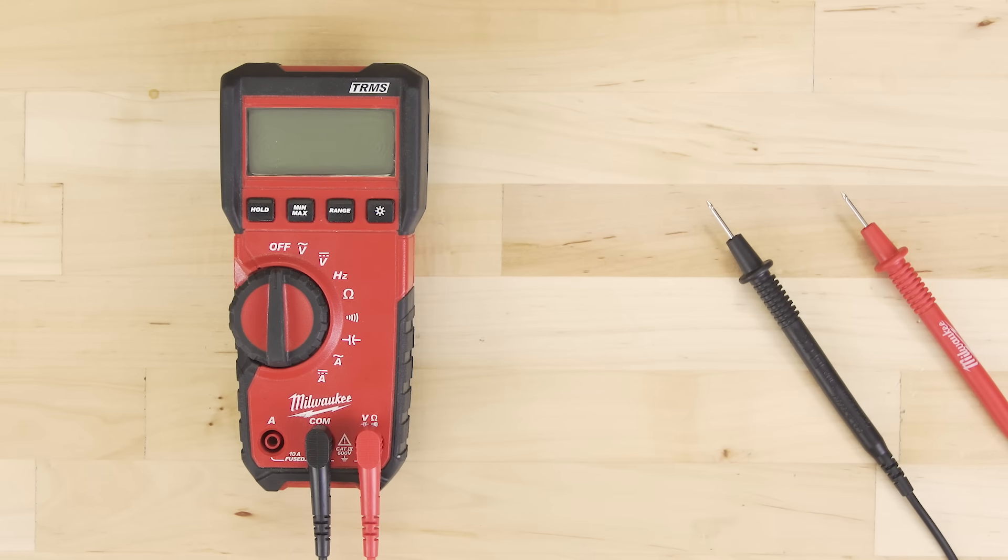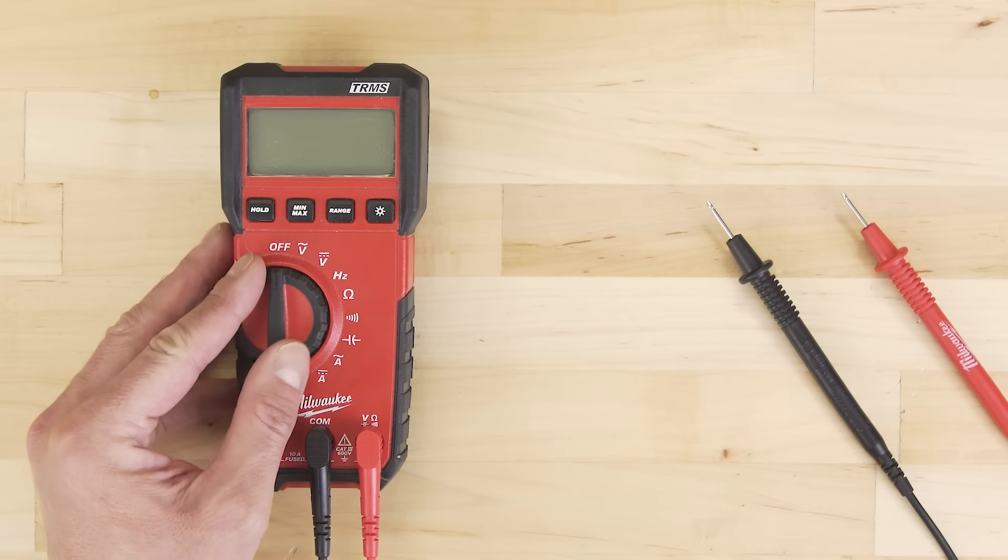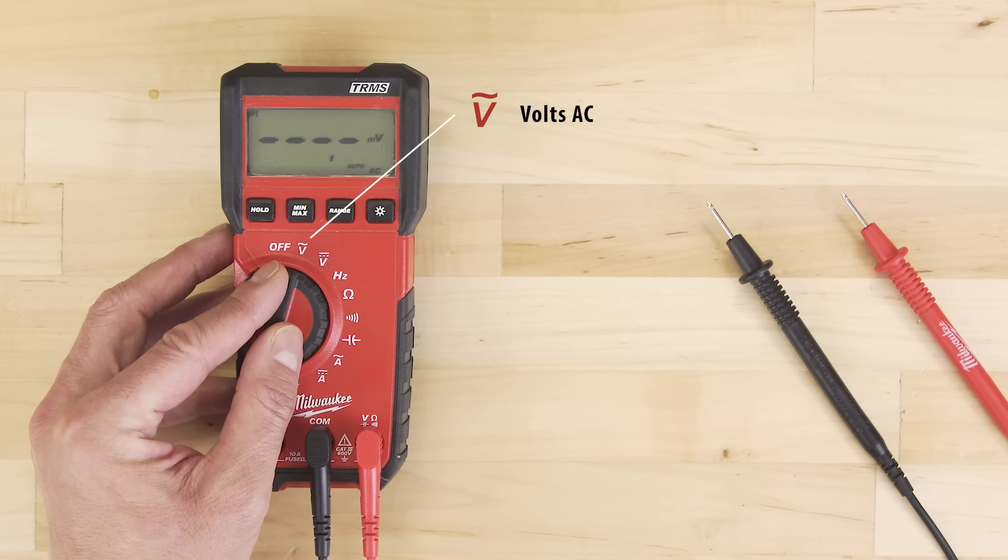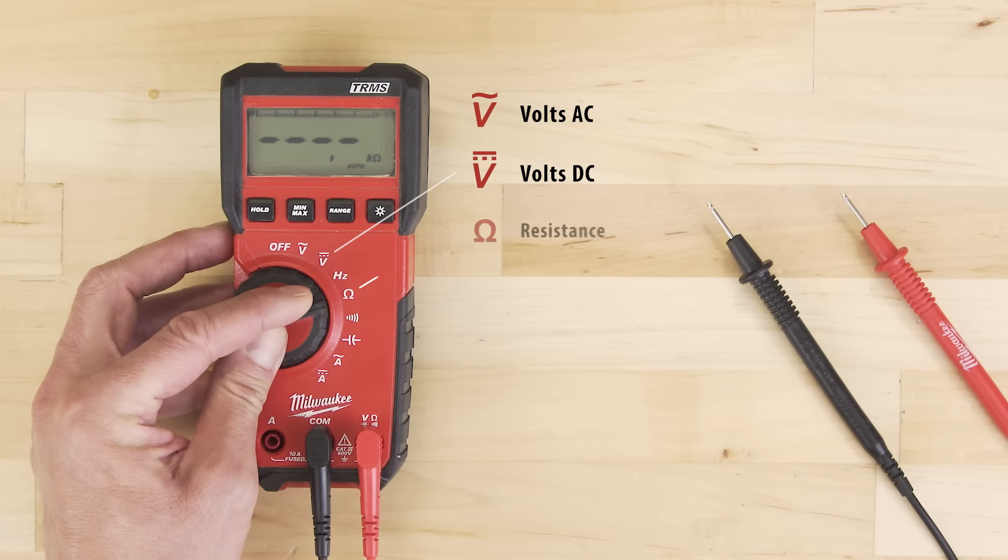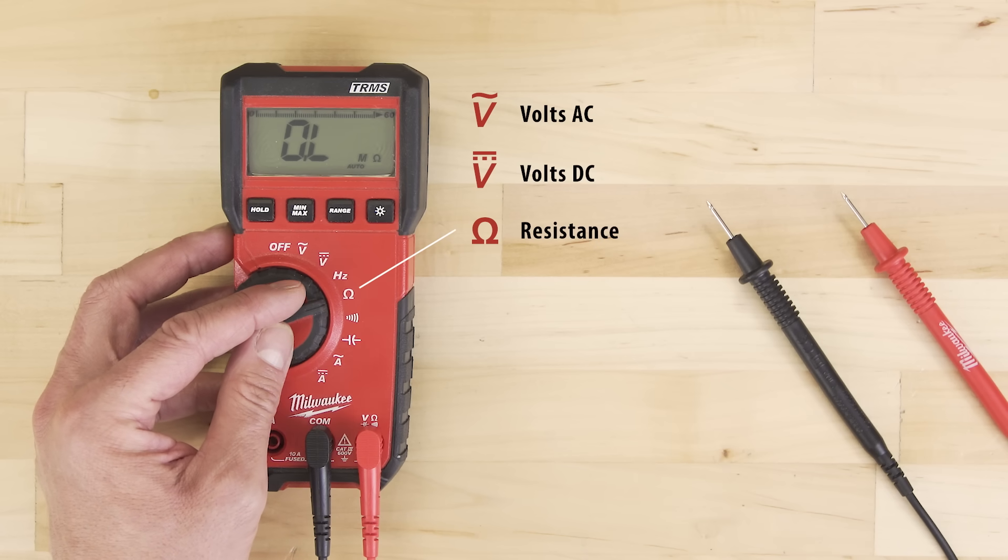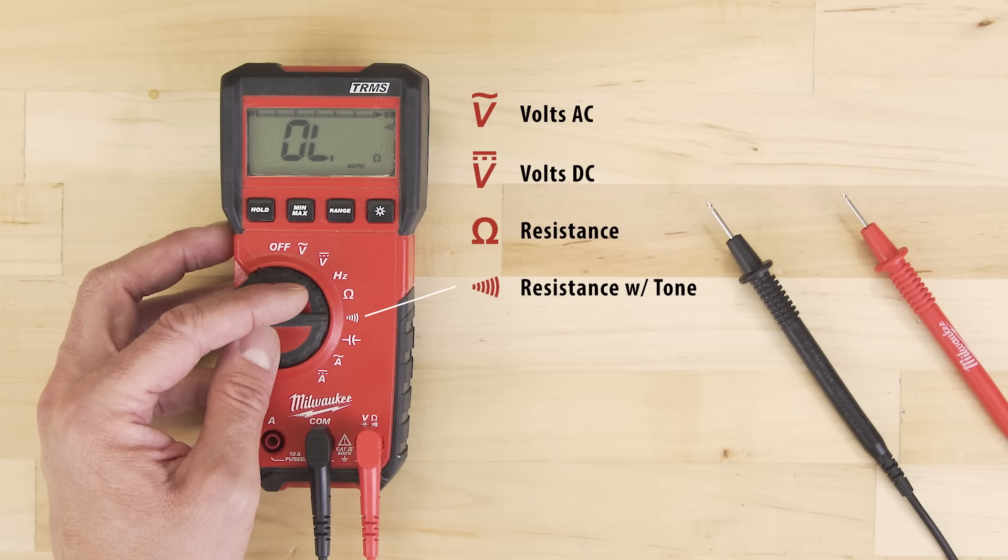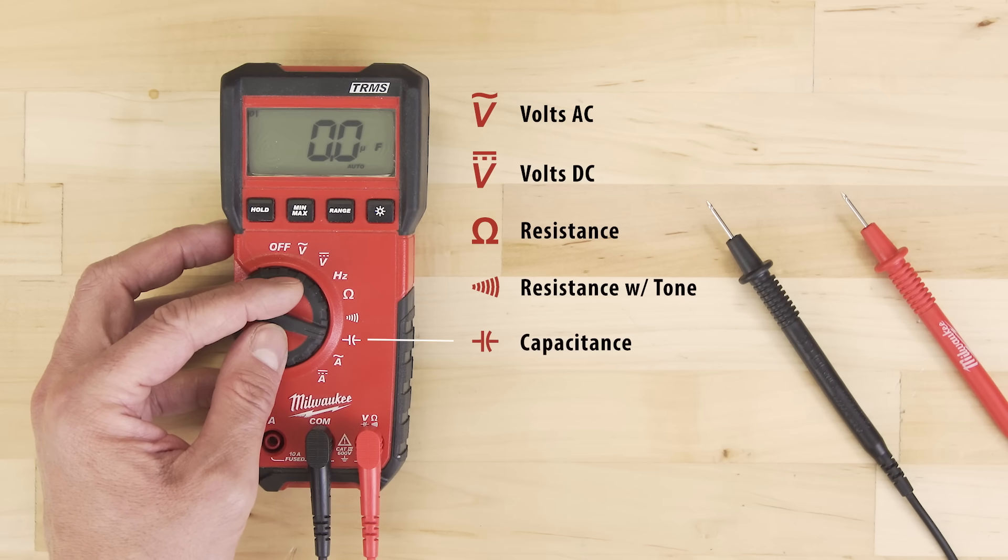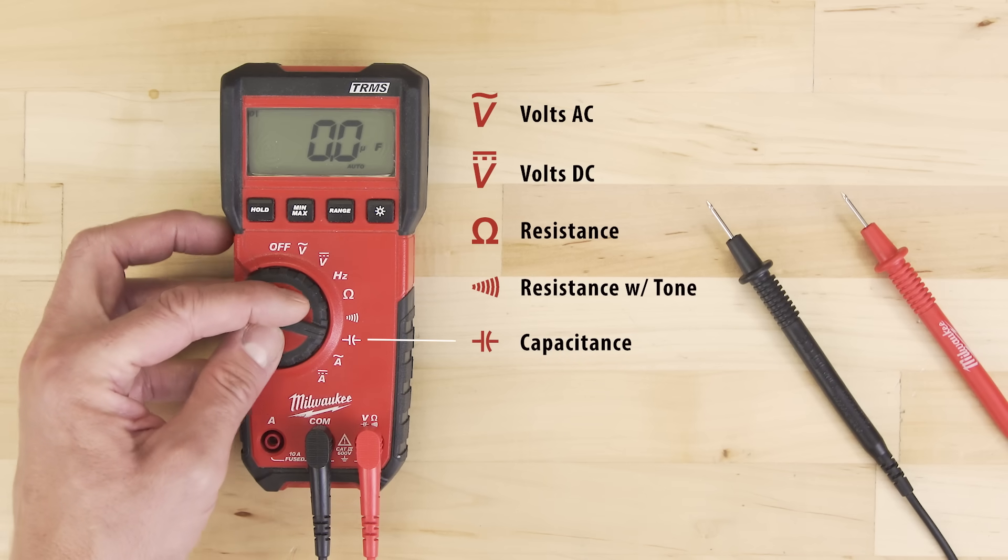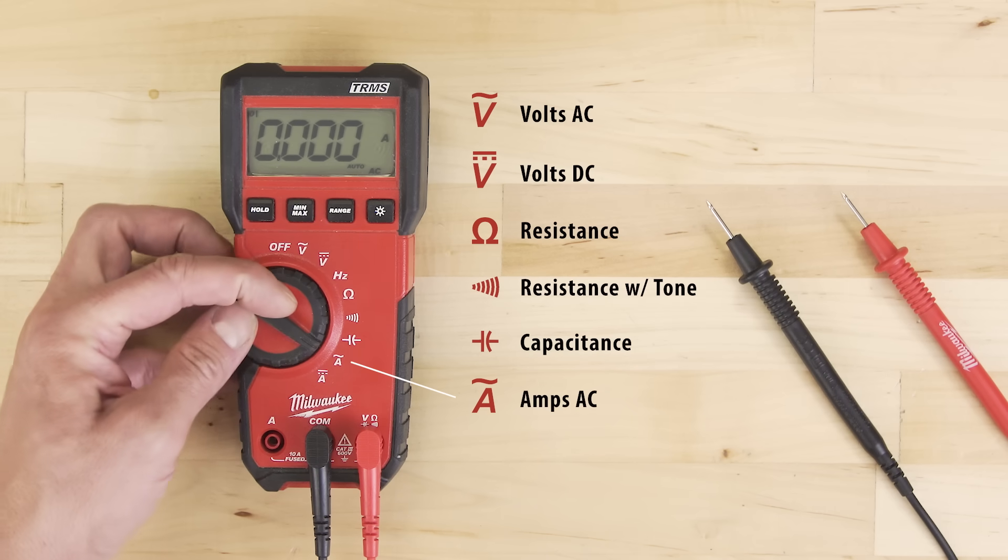Your model might look a little different, but all multimeters have the same common controls. For example, volts AC, volts DC, resistance in ohms, and resistance with tone, which will beep when there's continuity. As well, you can test for capacitance, amps AC, and amps DC.